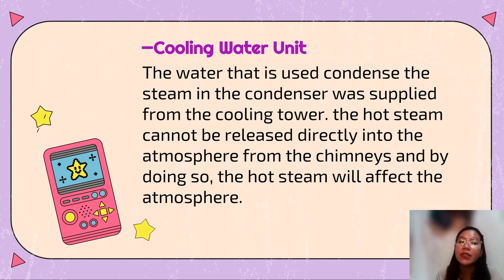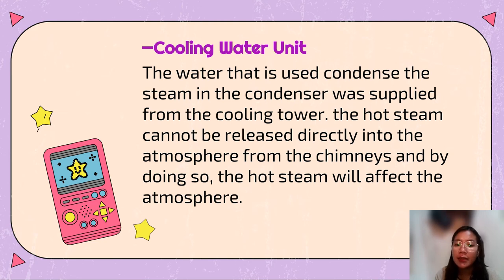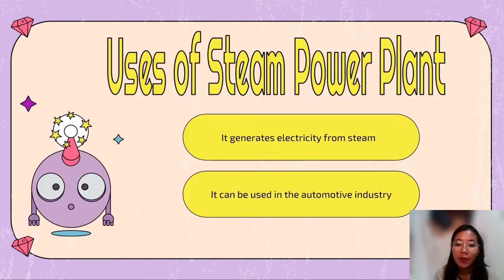In the cooling water circuit, the water that is used to condense the steam in the condenser is supplied from the cooling tower. The hot steam cannot be released directly into the atmosphere from the chimneys, as doing so would affect the atmosphere. The uses of the steam power plant include generating electricity from steam, and it can also be used in the automotive industry.